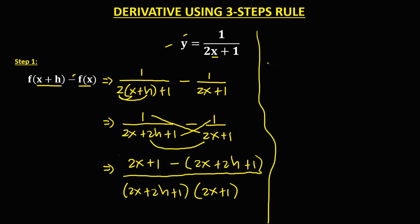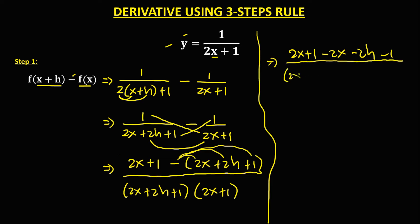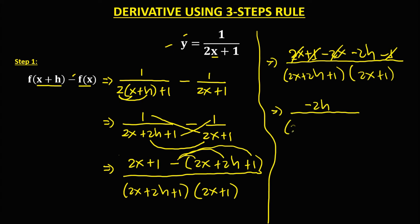Then simplify. The numerator has 2x plus 1, then distribute the negative: negative 2x, negative 2h, negative 1. The denominator stays as (2x plus 2h plus 1)(2x plus 1). Combining like terms: positive 2x and negative 2x cancel to 0, positive 1 and negative 1 cancel to 0. So the numerator is negative 2h, giving us negative 2h over (2x plus 2h plus 1)(2x plus 1).